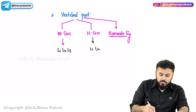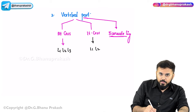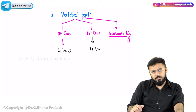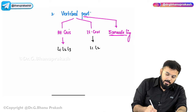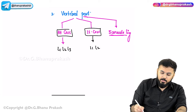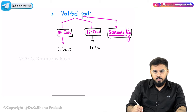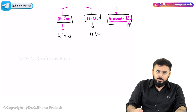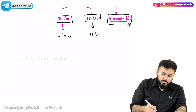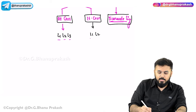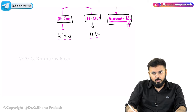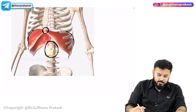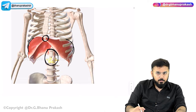In the vertebral origin, there is a right crus and a left crus of the diaphragm, along with five arcuate ligaments. The right crus originates from L1, L2, and L3, whereas the left crus originates from L1 and L2 only.